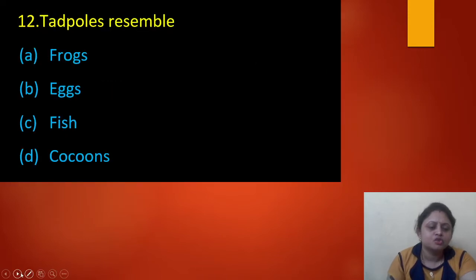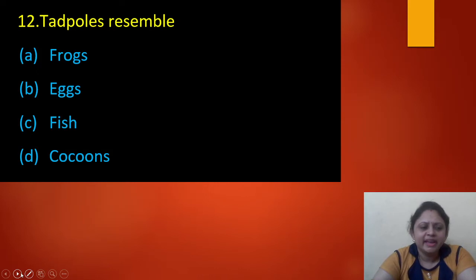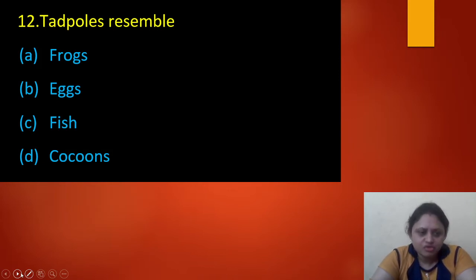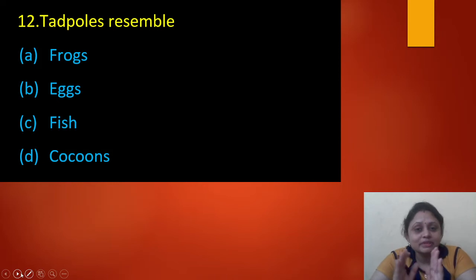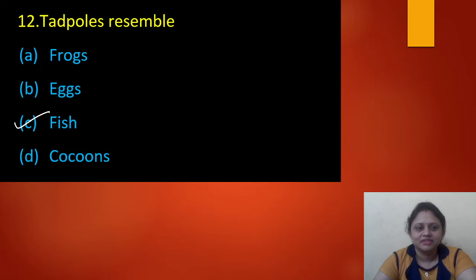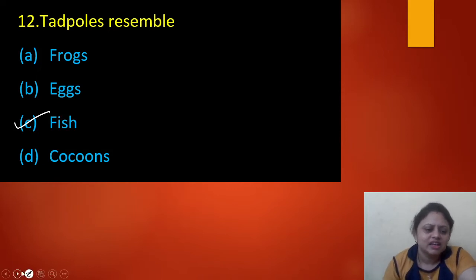Next question: a tadpole resembles — option A: a throat, option B: eggs, option C: fish, option D: corpus. The correct answer is option C — fish — as a tadpole resembles a fish.